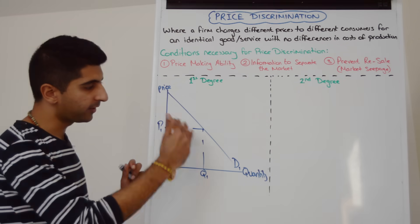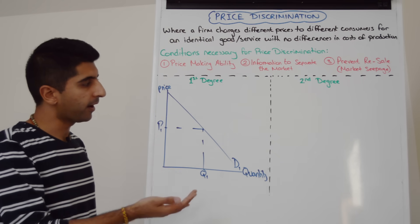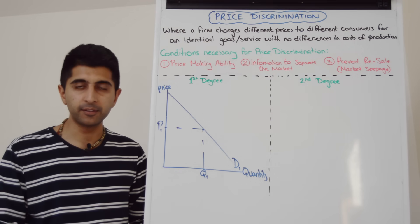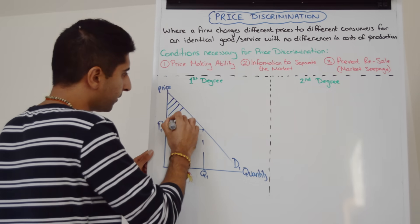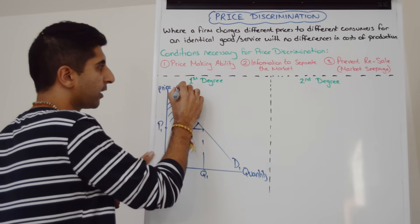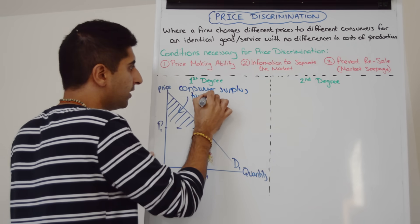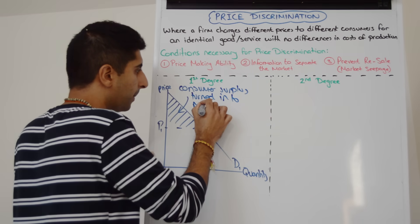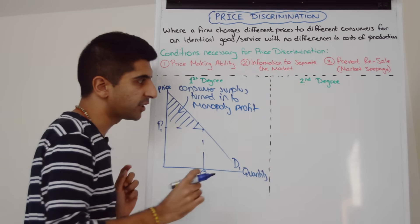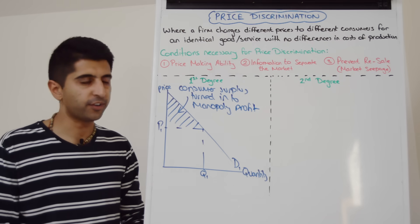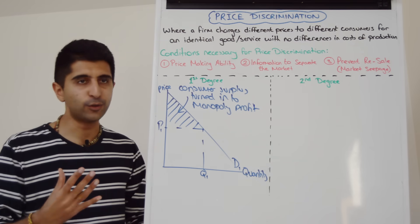So we take a normal market like this, we've got a demand curve. At a price of P1, consumer surplus would be this triangle here, the area above the price line and beneath the demand curve. That would be the consumer surplus, but not if a firm is using first-degree price discrimination. All of this consumer surplus would be turned into monopoly profit. So consumer surplus is now turned into monopoly profit as consumers are charged the exact price they're willing and able to pay for a good or service. Incredible to think this can happen, but again, if firms have got good information about us, by all means they can do something like this.